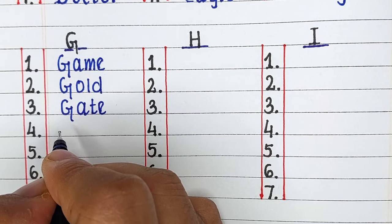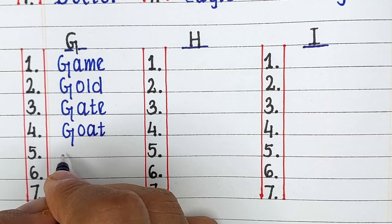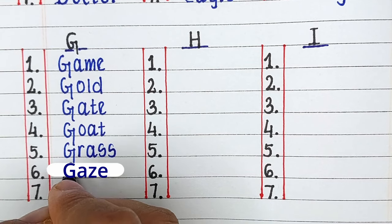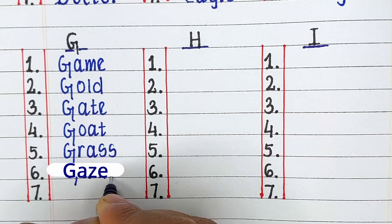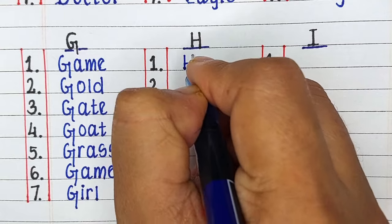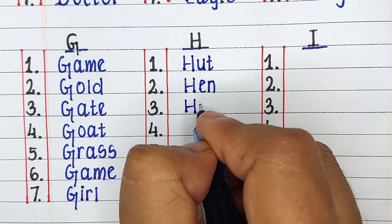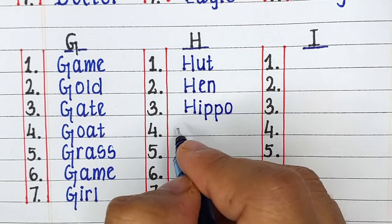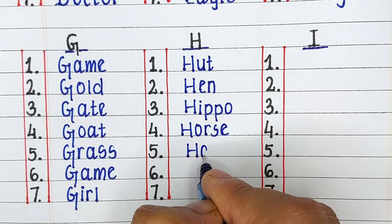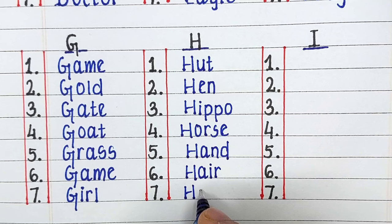Next is Alphabet G. The words starting from letter G are Game, Gold, Gate, Goat, Grass, Gauge, Girl. Next is Alphabet H. The words starting from letter H are Hut, Hen, Hippo, Horse, Hand, Hare and Honey.